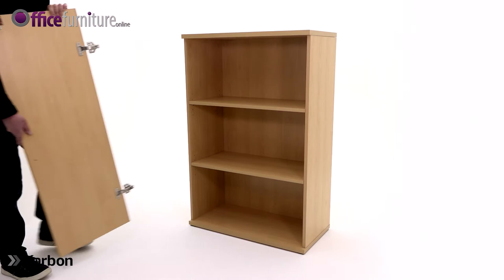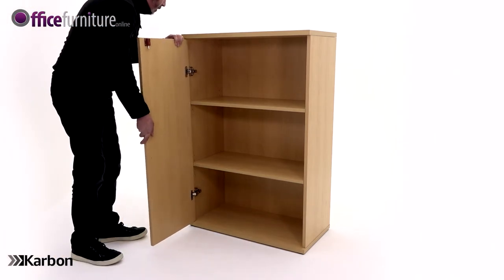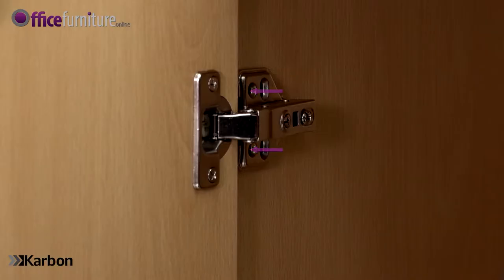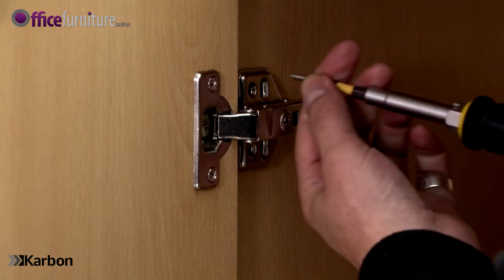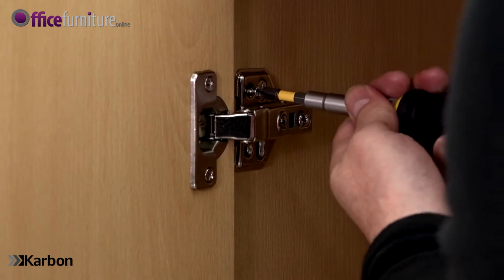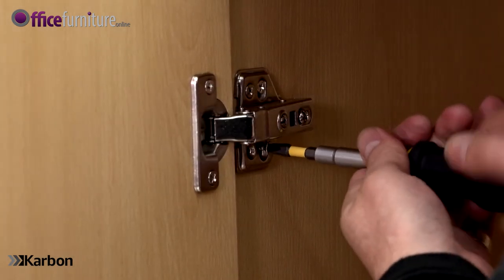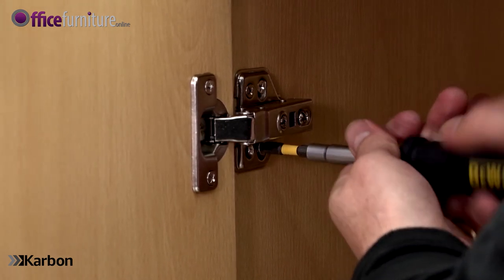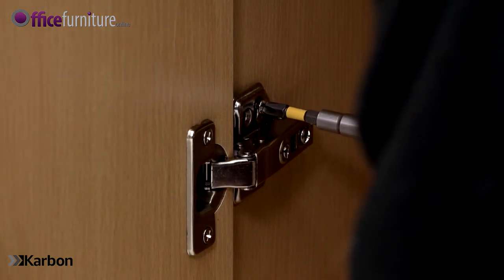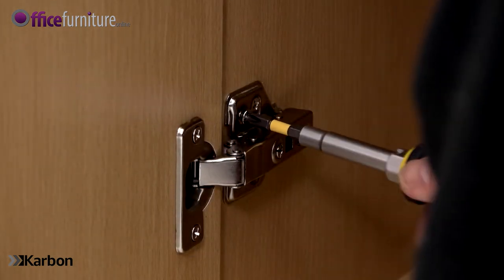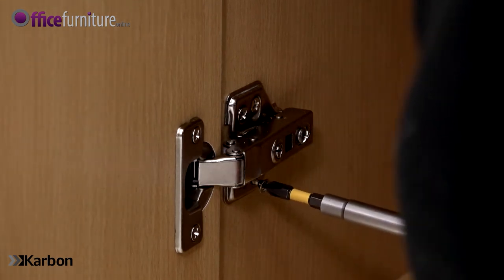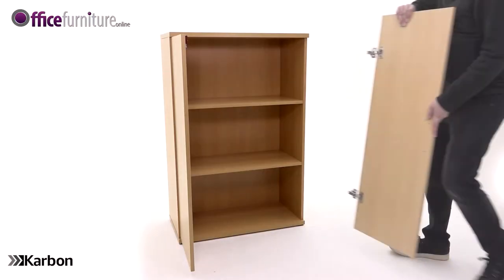Position the left door to the left-hand side of the carcass, making sure the inner lock is pointing to the top of the cupboard. Align the holes in the hinges with the pilot holes in the side panel and secure with the 15mm screws. You may need the help of another person to support the door while you attach it to the carcass. Repeat this step with the right-hand door.